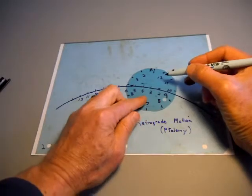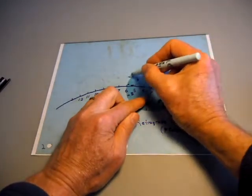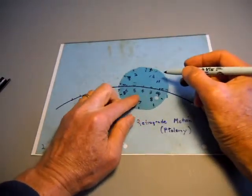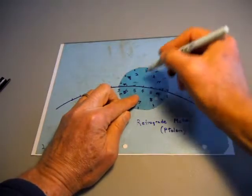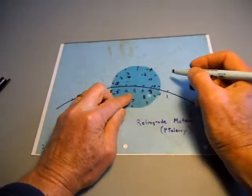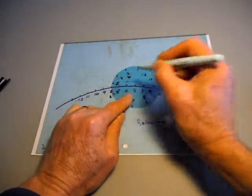When the small circle has gone to three, the planet's now at three on the small circle. When the planet goes to four, when the small circle goes to four, the planet goes to four. Five and five,